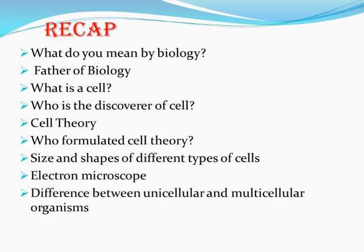I also told you about the difference between unicellular and multicellular organisms. Unicellular organisms have only one cell — example: amoeba. Multicellular organisms have more than one cell, such as plants and animals.